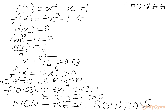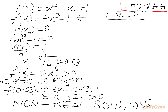So x = 2 is the only real solution for our radical equation. Now we are going to verify whether this is true. Let me write here: Verification.